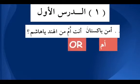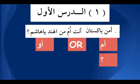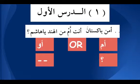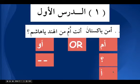The teacher asks: A min Pakistan anta am minal Hind ya Hashim? A new word here is Am. Am means or. There is another word that also means or — Aw. The difference: Am is used in questions, so if you want to ask are you from India or Pakistan — a question — you use Am. If you are making a statement — give me this or that — you use Aw. Am will almost always come inside a question.